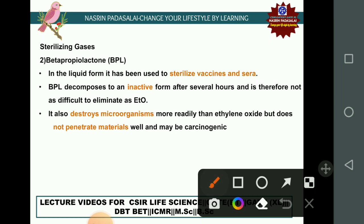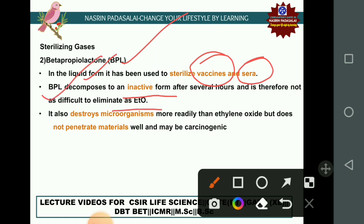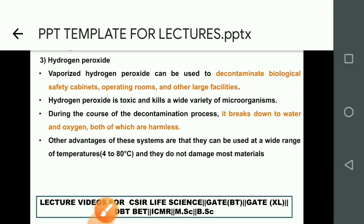Beta-propiolactone in its liquid form is used to sterilize vaccines and sera. It decomposes into an inactive form after several hours, making it easier to eliminate than ethylene oxide. It destroys microorganisms more readily than ethylene oxide, but its disadvantages are poor material penetration and that BPL is highly carcinogenic.